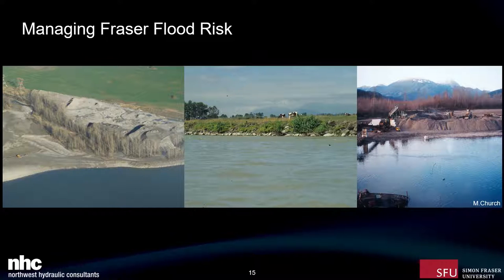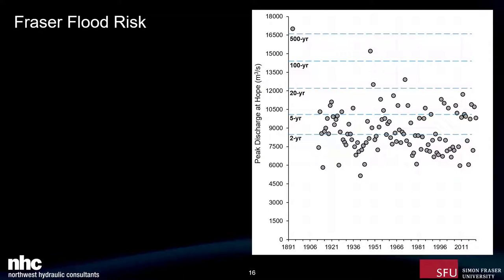Shifting gears — connected and I'll make that connection by the end — I want to talk about how we manage flood risk on the Fraser. There's always an annual flood risk associated with the freshet, depending on how much snow is stored in the basin and how fast it warms up in spring. We don't need more flood photos given what happened in November, though important context is that the Fraser itself didn't have a big flood — those were the smaller tributaries flooding out.